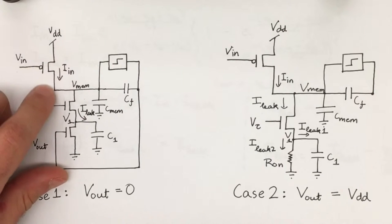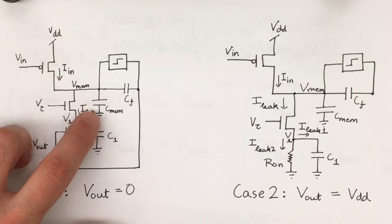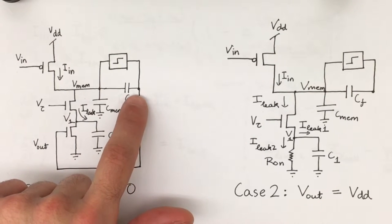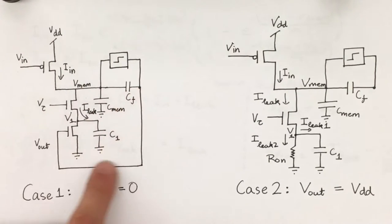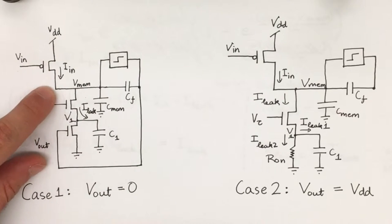First there is a current source denoted by this PFET here, and then it has several capacitances, this capacitive voltage divider right here, linking the output and essentially the input.